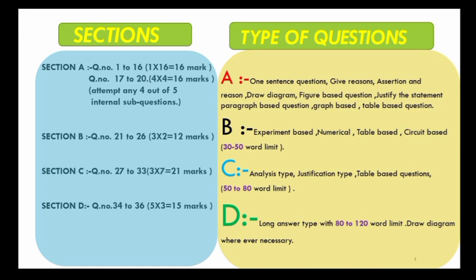Section B contains experiment-based questions. You can have numericals or sums based on physics or circuits, or table-based questions where a circuit diagram may be given and some questions may be asked. The word limit here is 30 to 50 words.